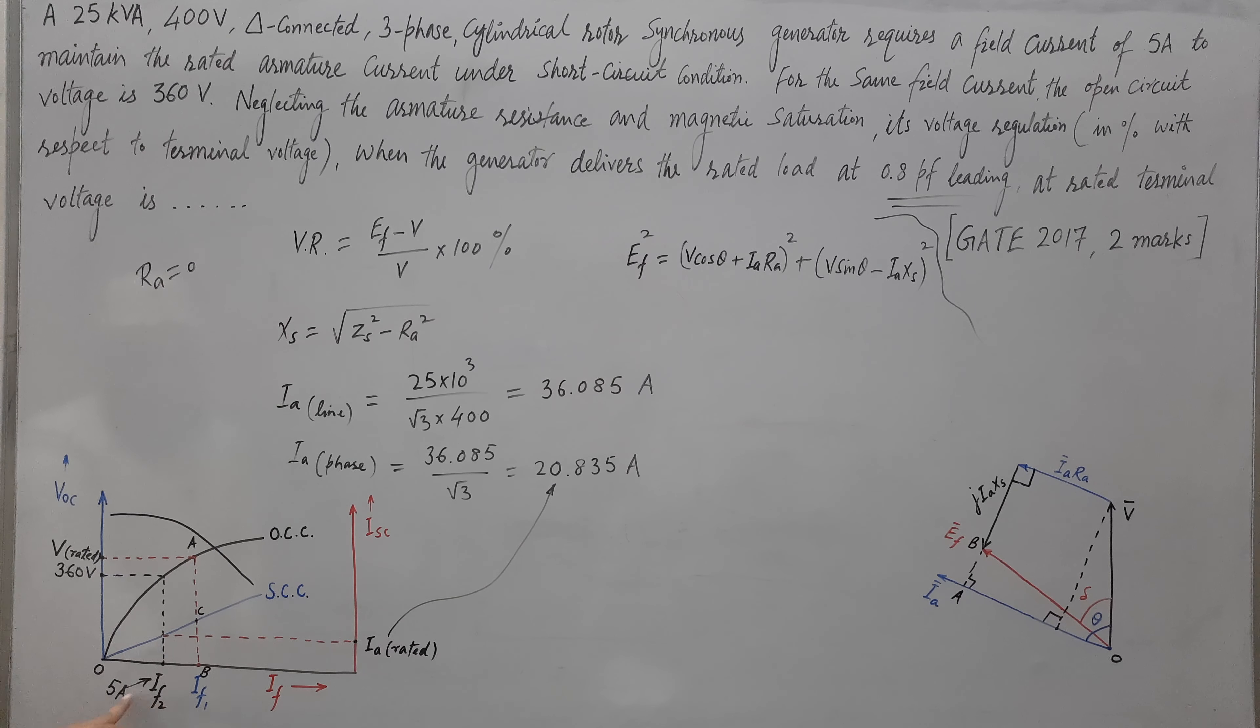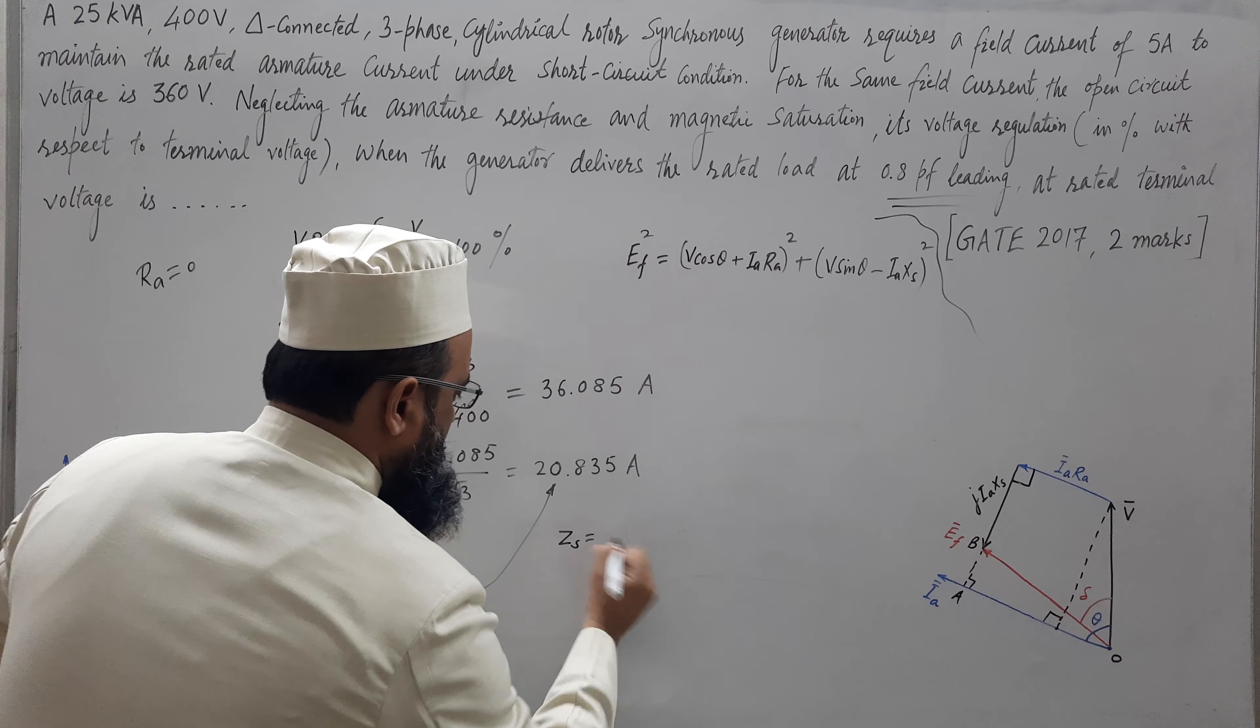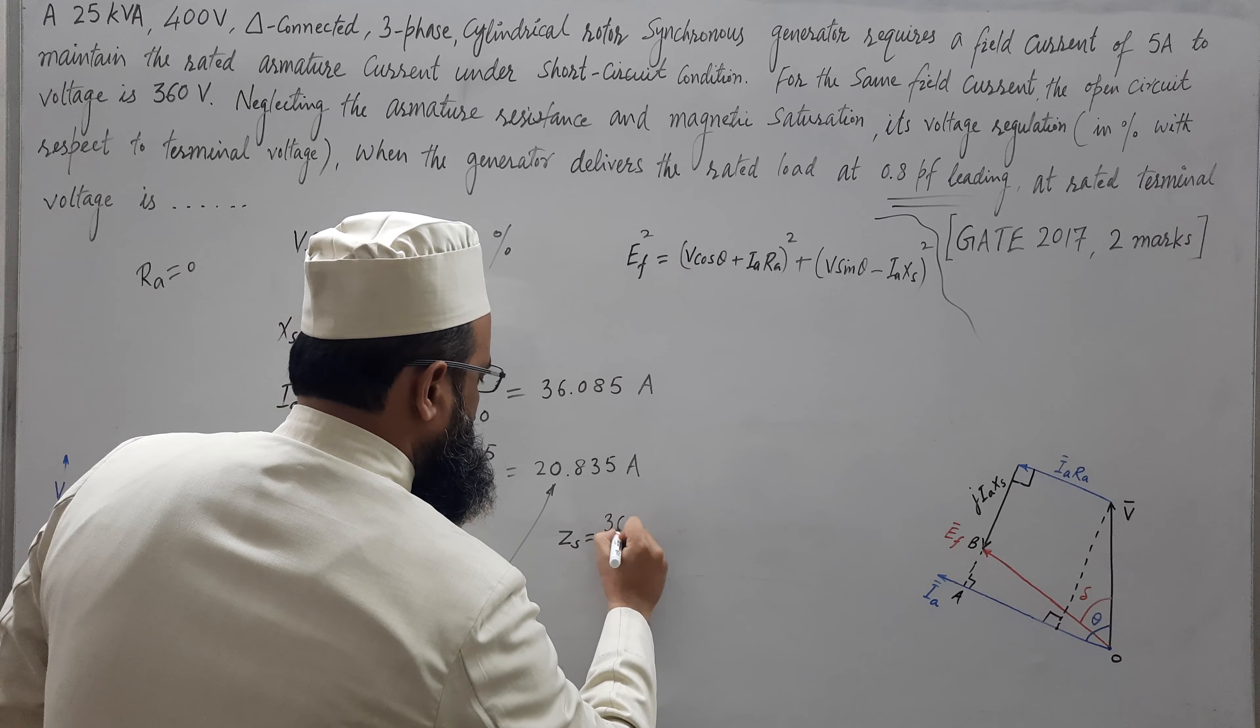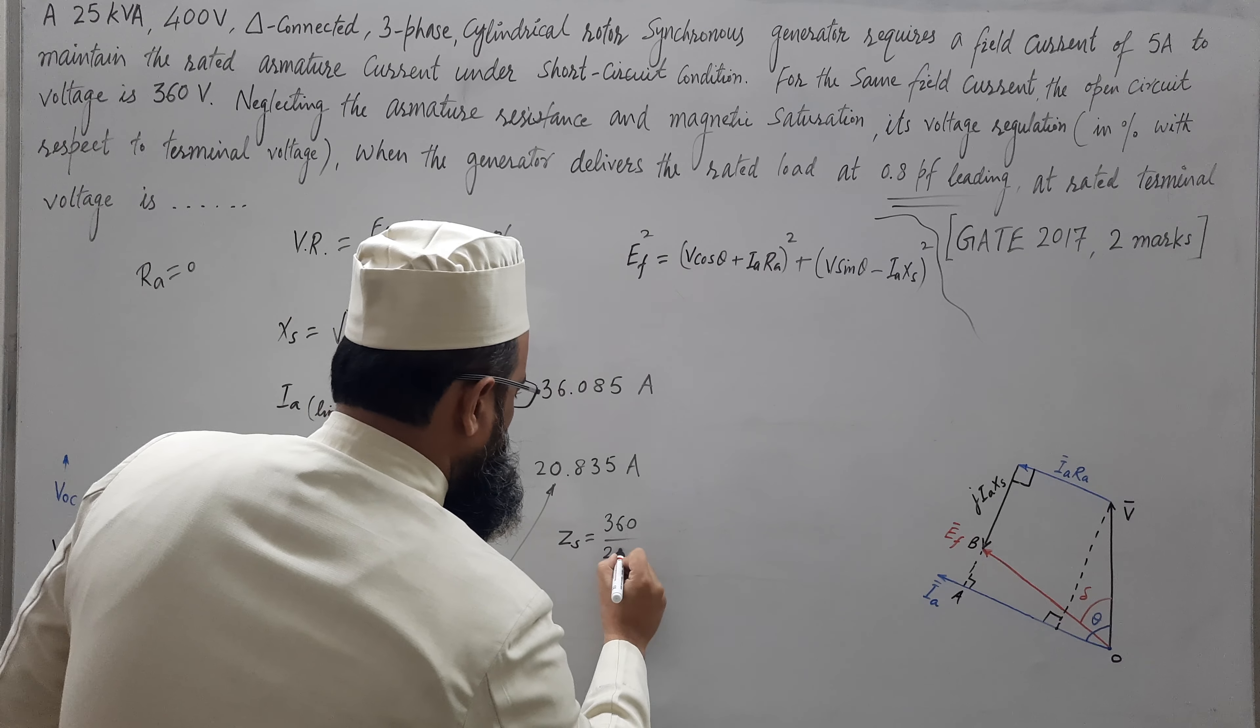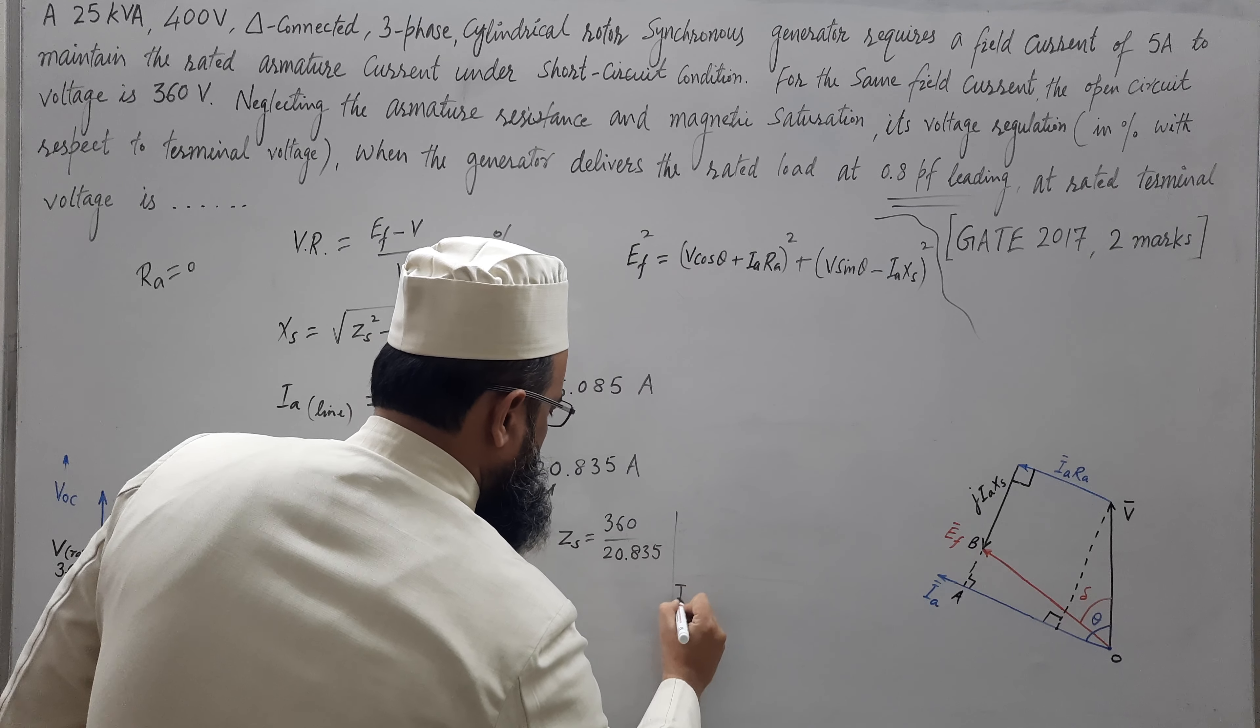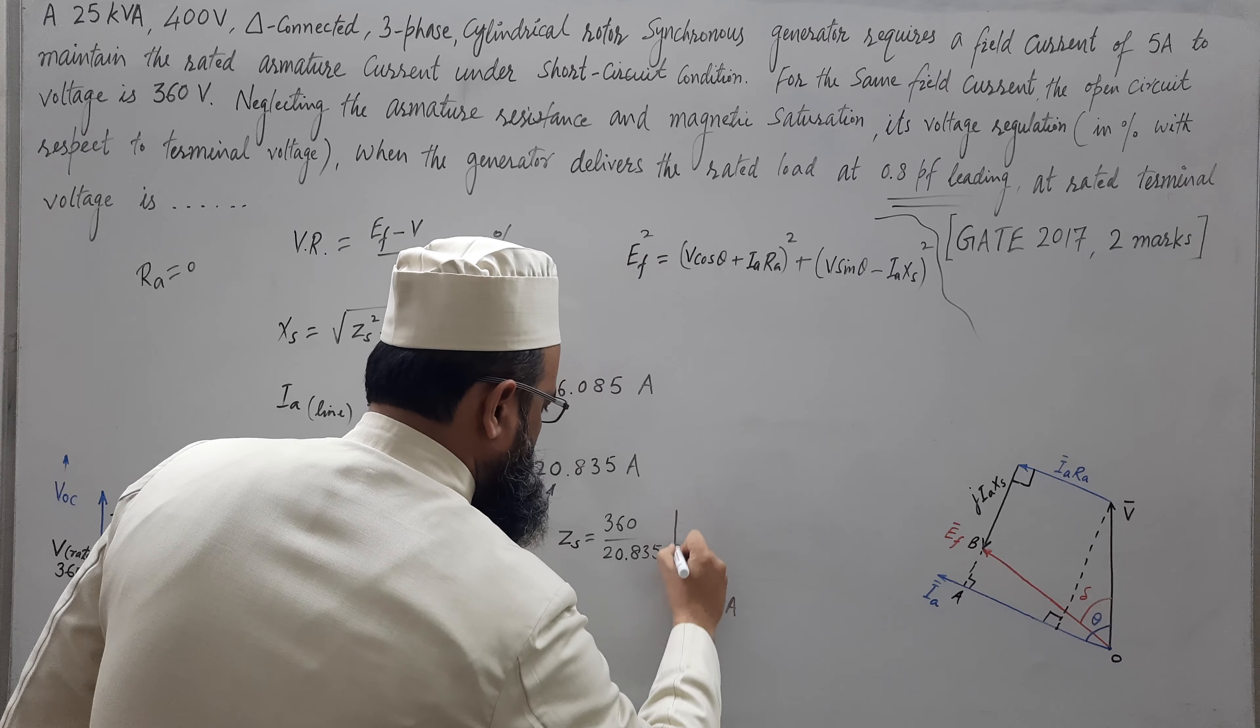So, from here corresponding to IF2 that is 5 ampere, now we know open circuit voltage, we know short circuit current. Now, we can evaluate ZS as VOC that is 360 upon ISC that is 20.835 at IF equal to 5 ampere at same field current.